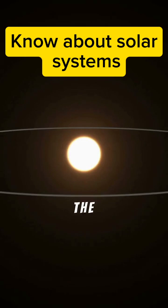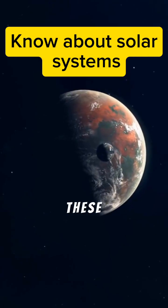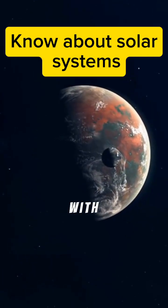Closest to the sun are the inner planets: Mercury, Venus, Earth, and Mars. These are rocky worlds, each with unique characteristics.